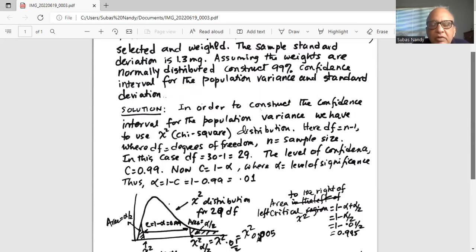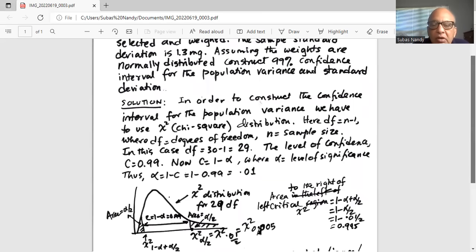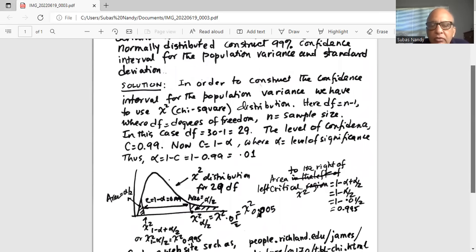Confidence level c equals 1 minus alpha, where alpha is the level of significance. So alpha equals 1 minus c, which is 1 minus 0.99 equal to 0.01.